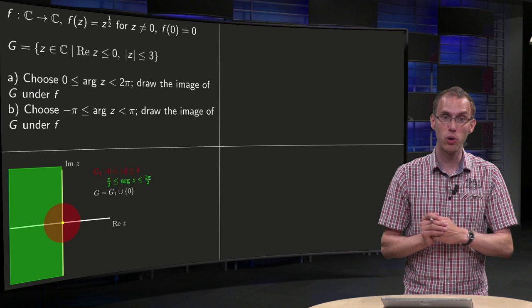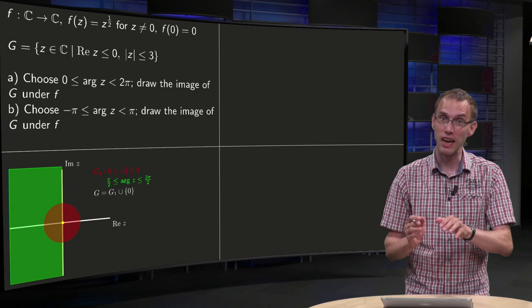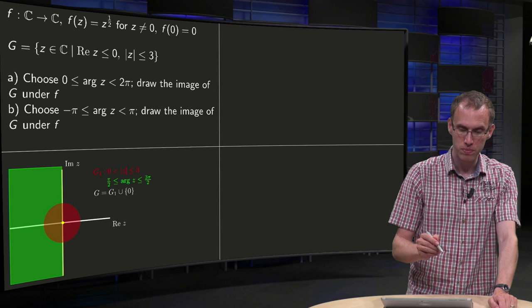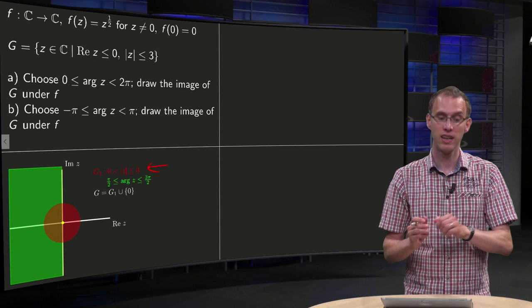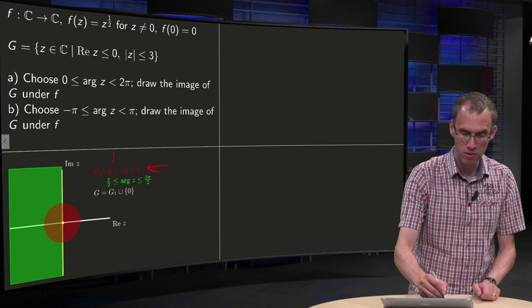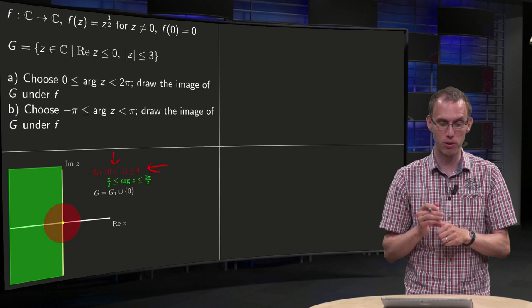Let's draw our region G first. So the real part of z is negative, so that's the green region, the norm of z between zero and three, that's the red circle. And we left out zero, we will do zero separately, so point zero is a yellow dot.